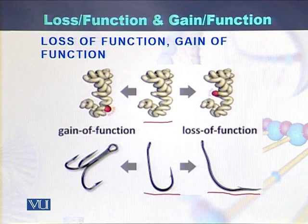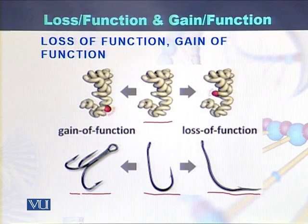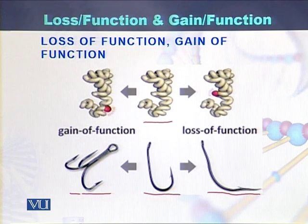On the other hand, if we see this diagram, we will consider it as gain of function. It means that it works to catch the fishes, but in a different way. The actual function of that protein was different, but now after the change in the protein sequence, the function of the protein is different as compared to the original protein.